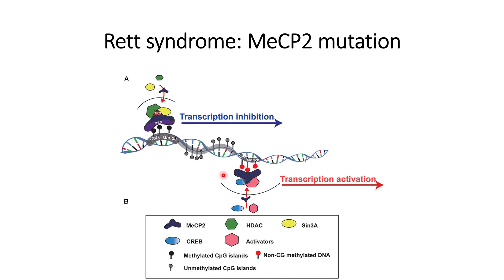However, in the normal case, the non-methylated CpG island portion of the DNA will bind to MECP2, and it will attract activators and CREB, which will promote the transcription of CpG islands. This inhibition in the mutated case will affect the normal development of the brain.